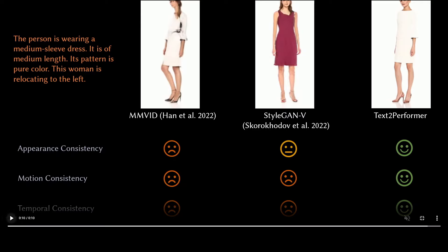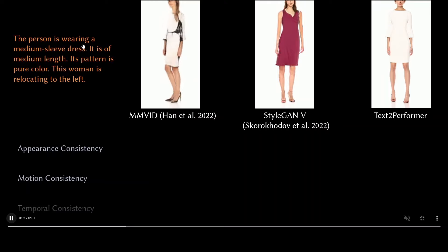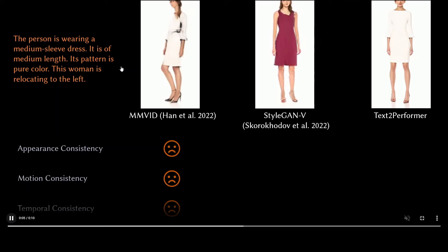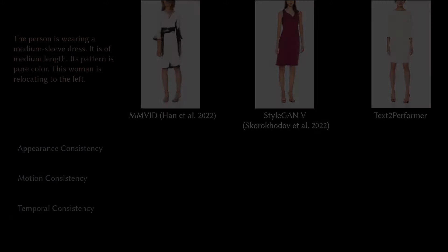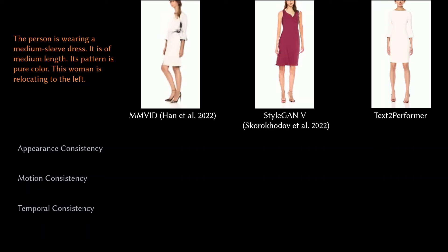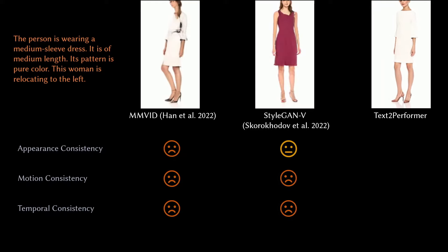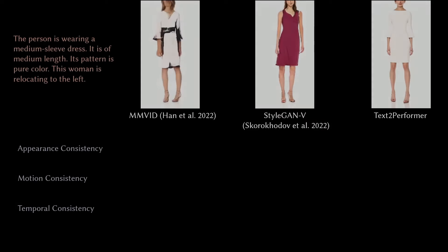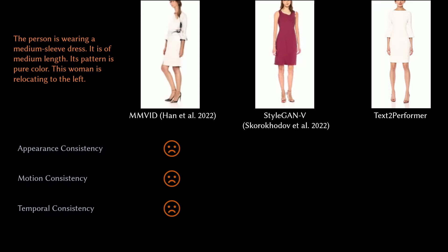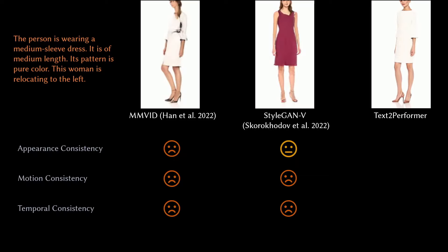Let's look at a comparison with MM-WIT and StyleGAN-V against Text2Performer. In this example, the person is wearing a medium-sleeve dress of medium length with a pure color pattern, and the woman is relocating to the left. Looking at appearance consistency, motion consistency, and temporal consistency — MM-WIT has failed on all of them, StyleGAN-V is slightly okay on the first one, but Text2Performer has performed really well on all of them.